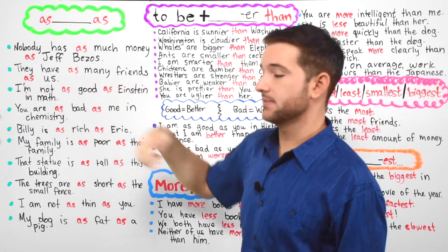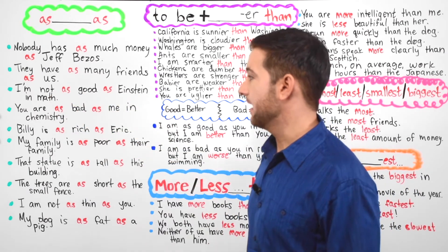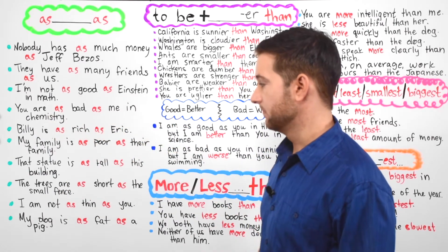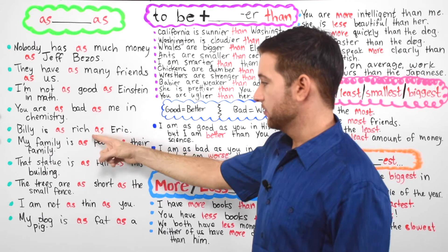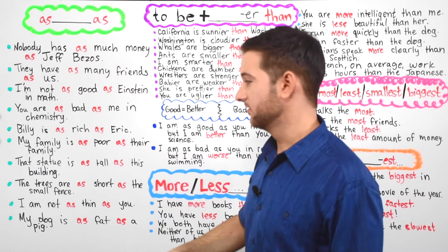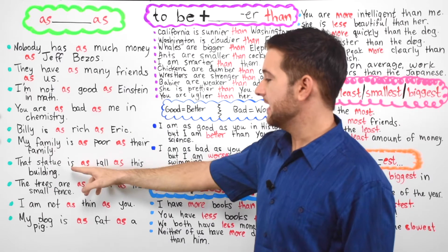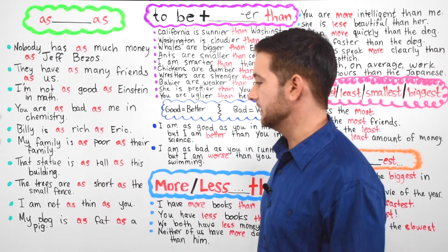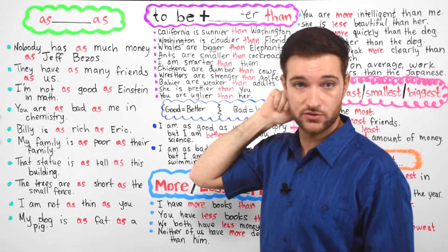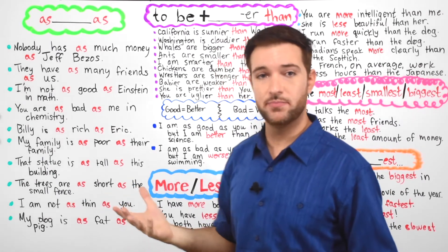They have as many friends as us, meaning me and you. I'm not as good as Einstein in math. You are as bad as me in chemistry. Billy is as rich as Eric, but he's not as rich as Jeff Bezos. My family is as poor as their family. That statue is as tall as this building. A building is like you can have a skyscraper like the one in Dubai. That's a very, very big building.